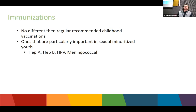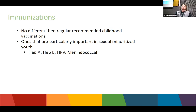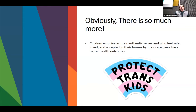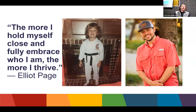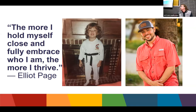Immunizations are no different than for any other child — get them as vaccinated as possible. The ones especially important for this community are hepatitis A, hepatitis B, HPV, and meningitis. The moral of the story: kids who can live as their authentic selves and feel safe, loved, and accepted are going to have much better health outcomes altogether. A little bit of my story: I was that kid who at age three told my parents I'm a boy and my genitals are going to change when I get older. They did the wait-and-see method, and I started transitioning my last year of medical school. I was never a princess — I was always a ninja.